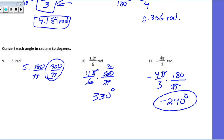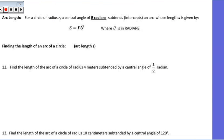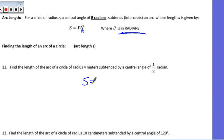Arc length is something we'll be looking at as we go through. The formula is S equals r times theta, where S stands for arc length, r is the radius, and theta is the angle swept out in radians. To find the arc of a circle with radius 4 meters subtended by a central angle of half a radian — we're already in radians — it's very easy: radius times angle gives us 2 meters for the arc length.